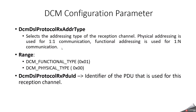This parameter is used to select the addressing type of the reception channel. Physical addressing is used for one-to-one communication and functional addressing is used for one-to-many communication. The range of values is: functional type indicates 1 and physical type indicates 0. The Rx PDU ID is the identifier of the PDU used for this reception channel.